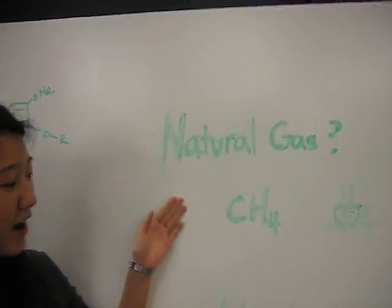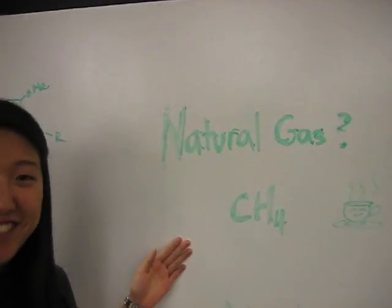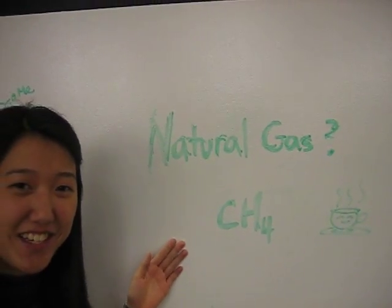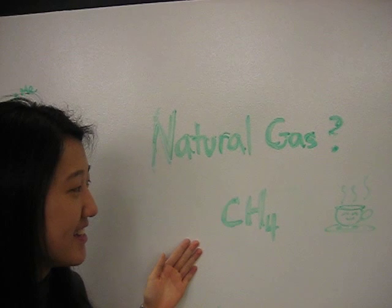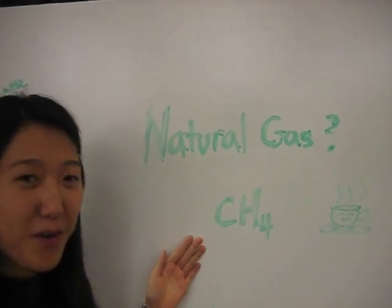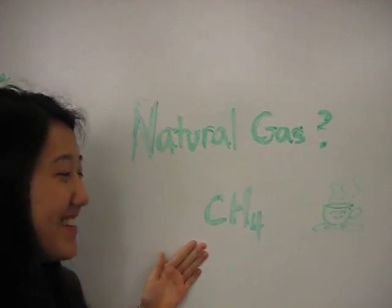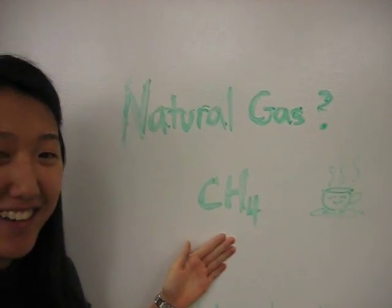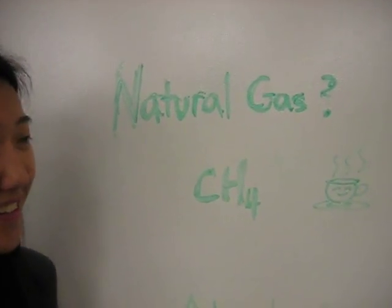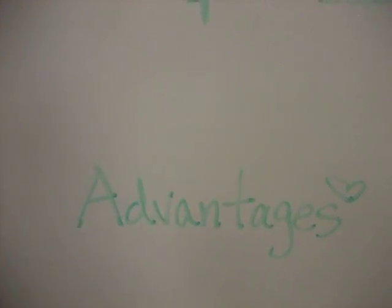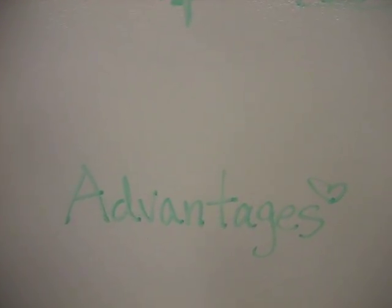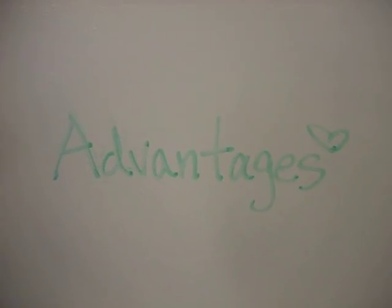The following are advantages and disadvantages of natural gas. Its chemical formula is CH4. Now we shall guess what the advantages are through pictures.